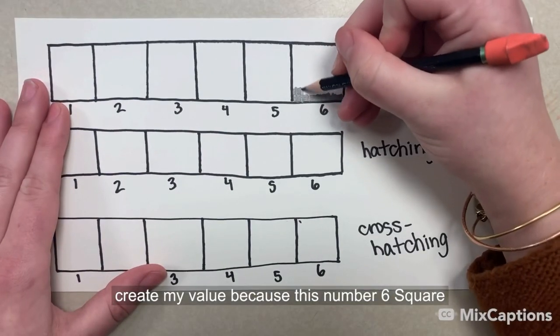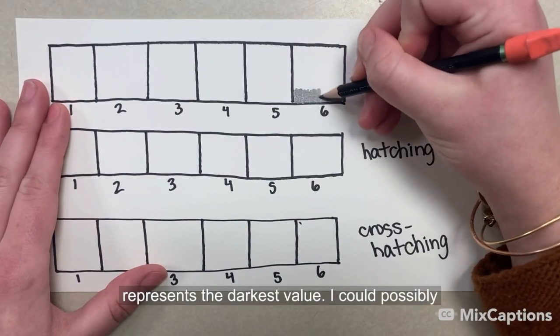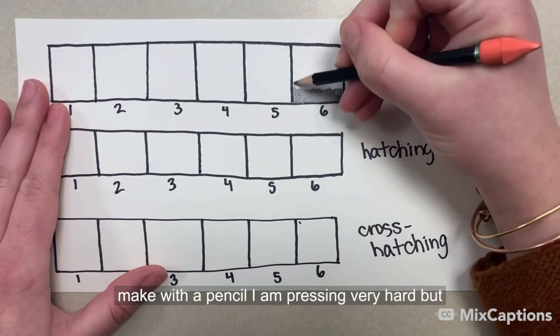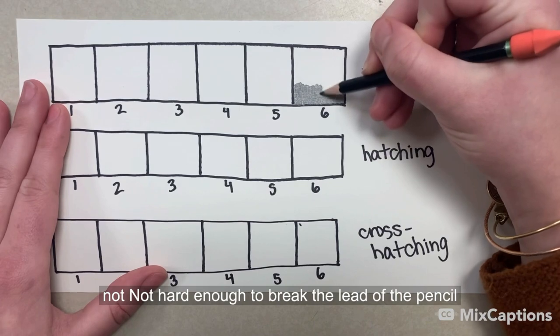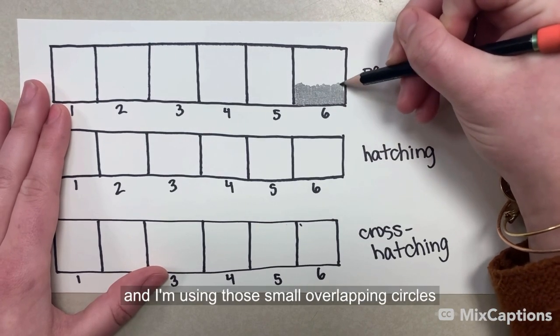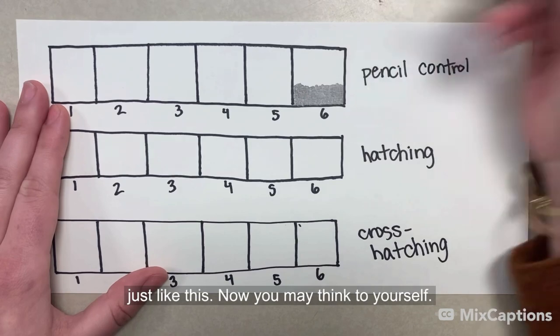Because this number six square represents the darkest value I could possibly make with a pencil, I am pressing very hard, but not hard enough to break the lead of the pencil. And I'm using those small overlapping circles just like this.